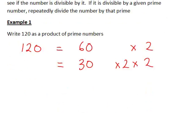30 is again an even number and divisible by 2. In fact, 30 is 15 times 2, and that's all still multiplied by 2 times 2.